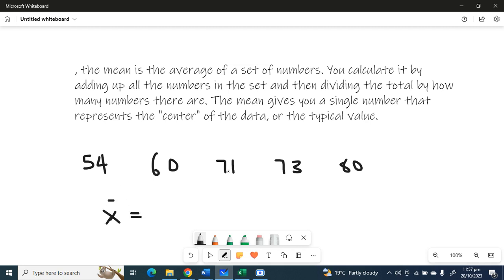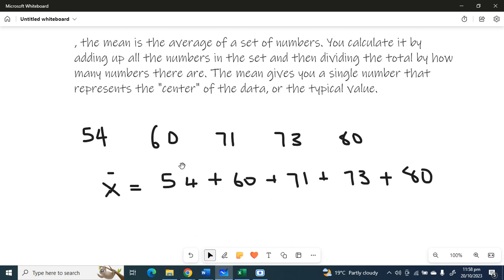54 plus 60 plus 71 plus 73 plus 80. Then we count the number of numbers in our data set, so we have one, two, three, four, five.